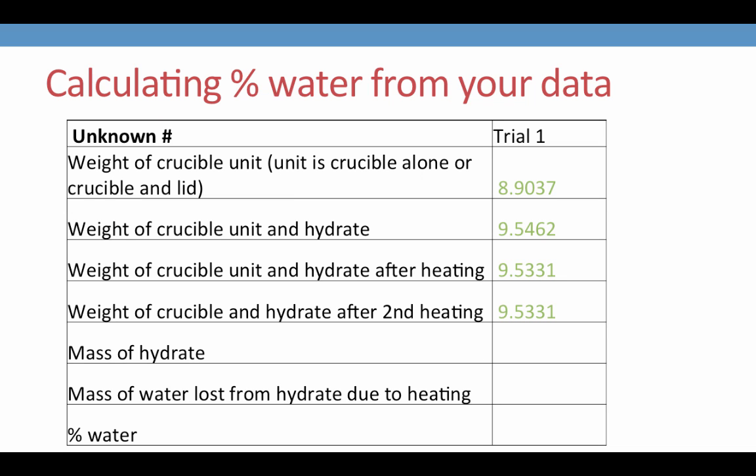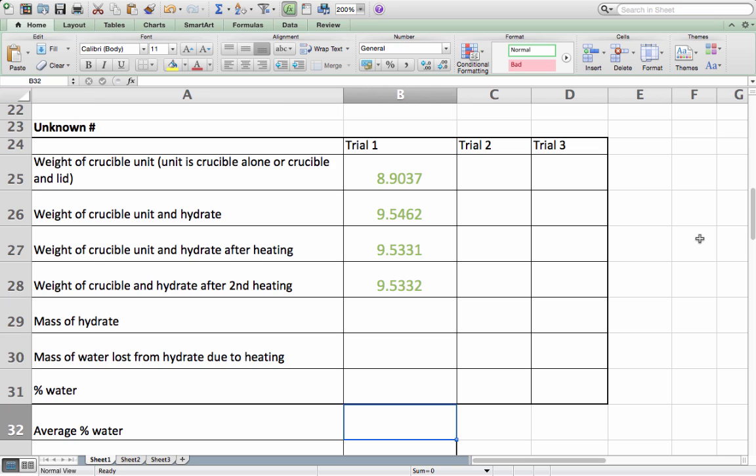Here is an example of how you would calculate your percent water from your data. I will use Microsoft Excel to assist with my calculations. Here I have entered the raw data from my experiment. You will see the mass of my crucible unit after cleaning and heating. Then the mass of the crucible unit with the hydrate added. You will see that it is a difference of about 0.5 grams, as indicated by the lab manual procedure.